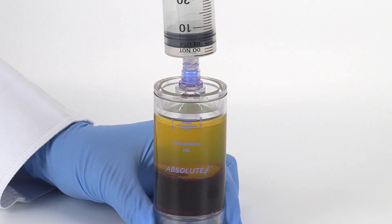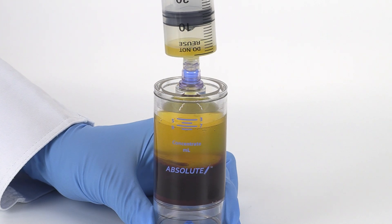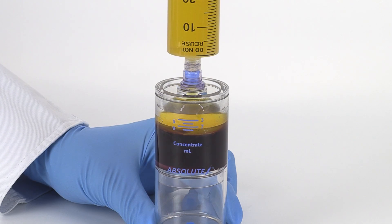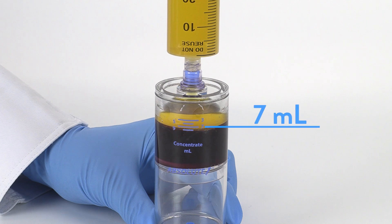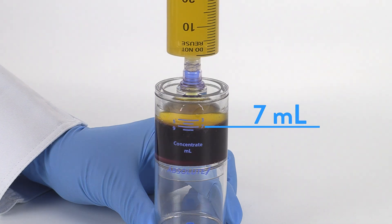Attach the sterile 60 milliliter syringe to the needleless port and aspirate the plasma. Aspirate until the red blood cell interface reaches 7 milliliters or the desired volume marker. This traps the plasma and platelet buffy coat layer in the aspirating cone.